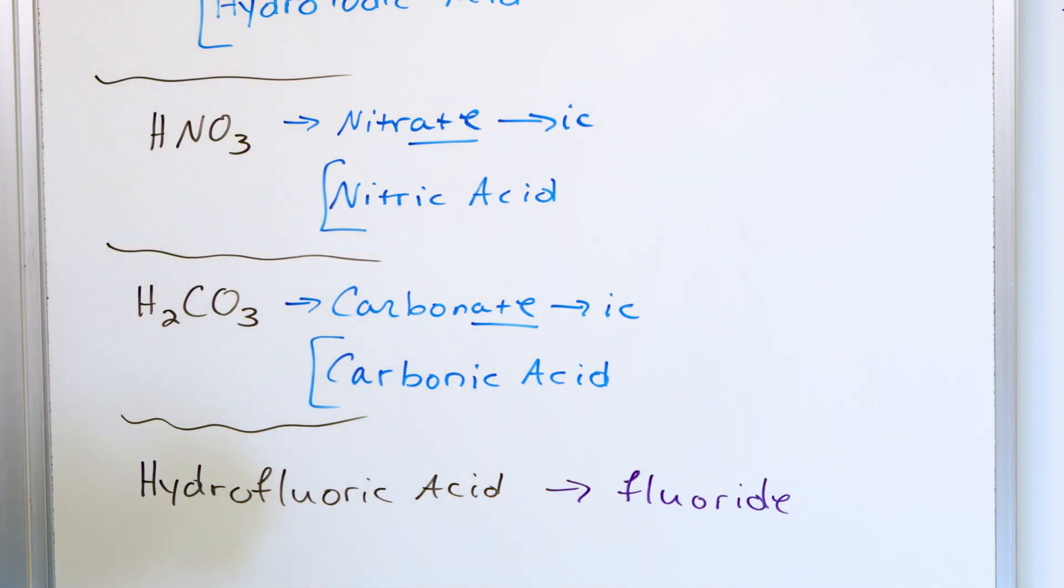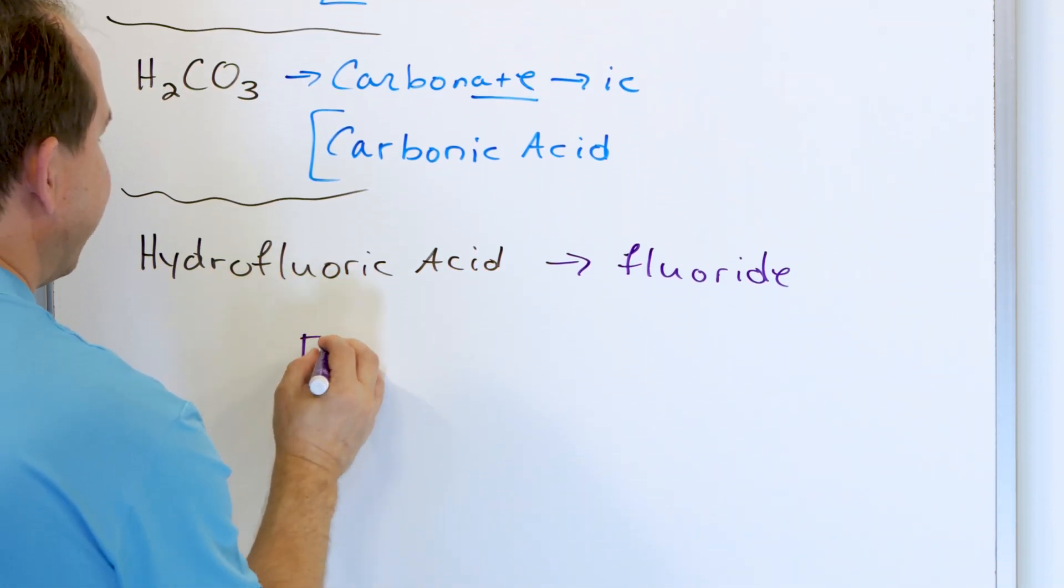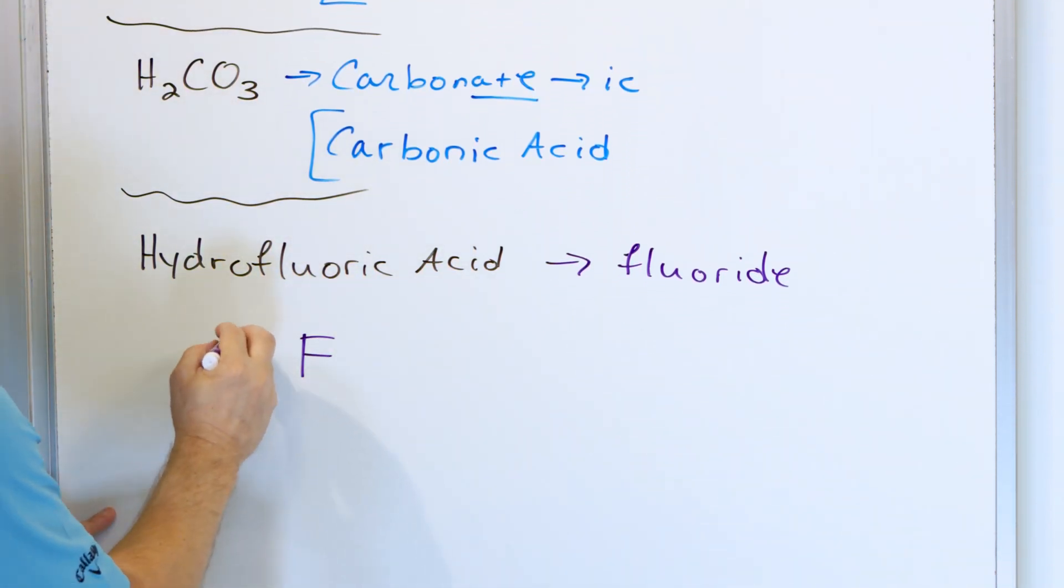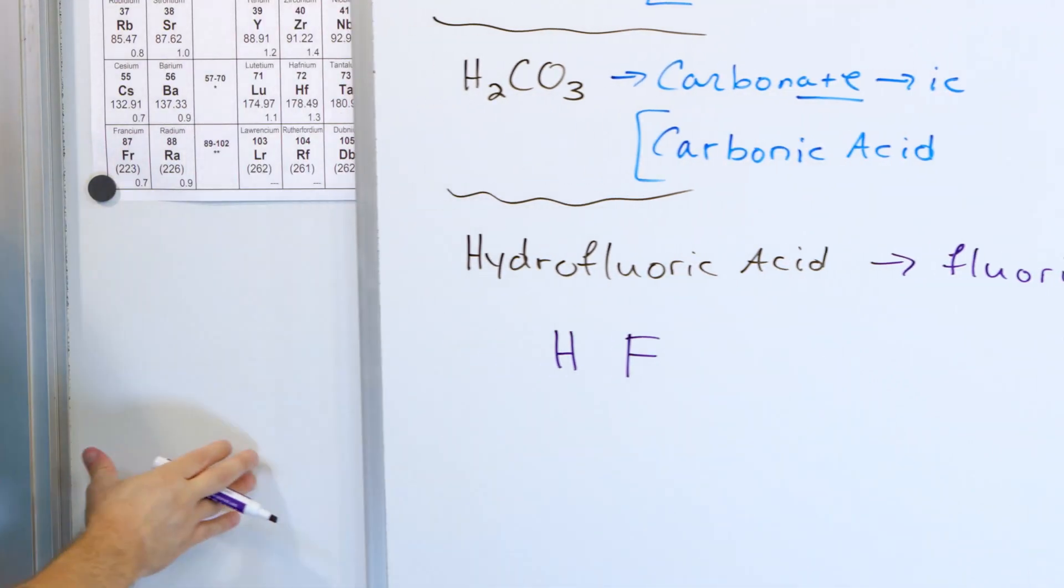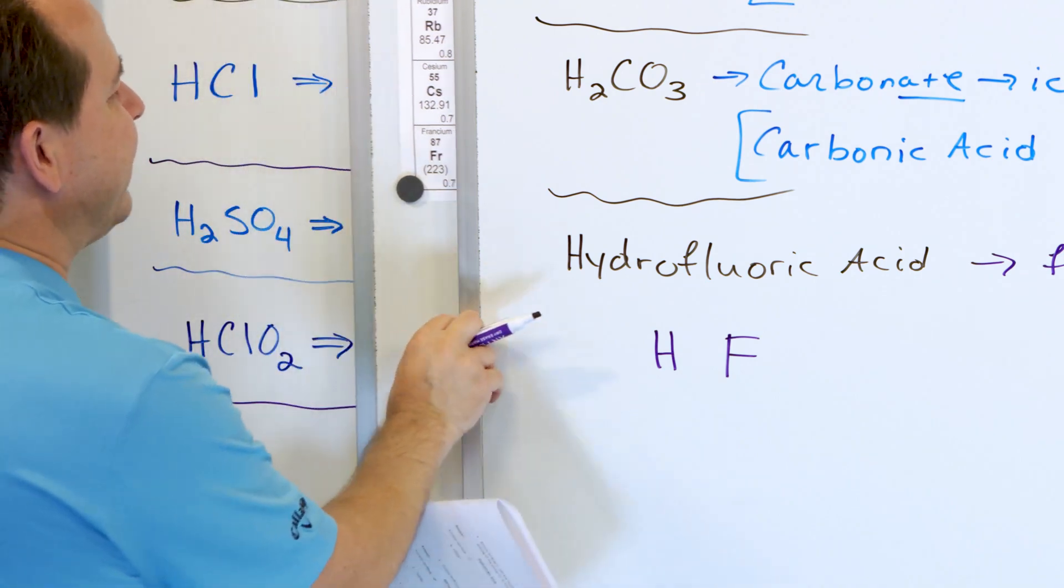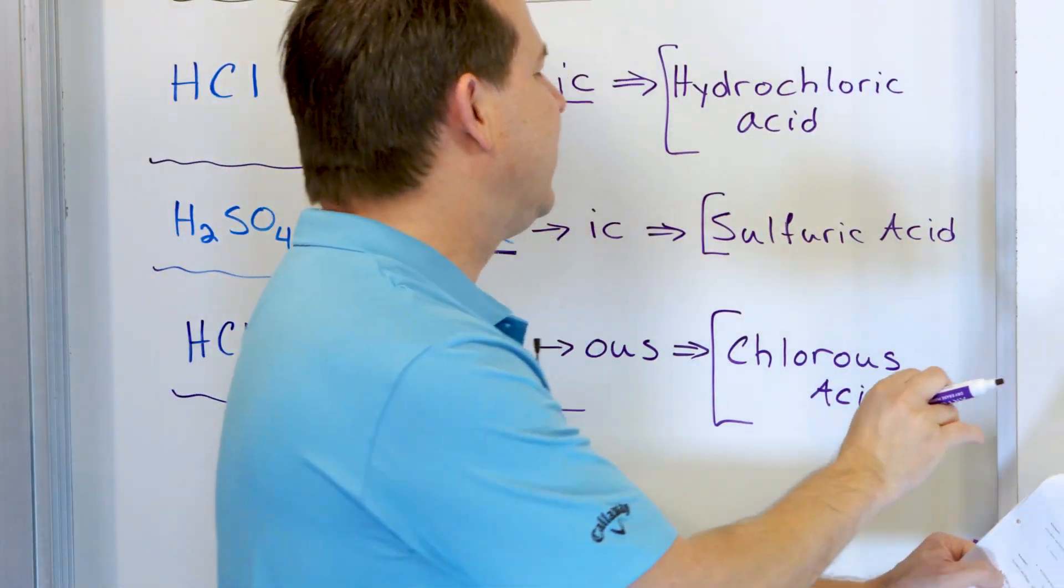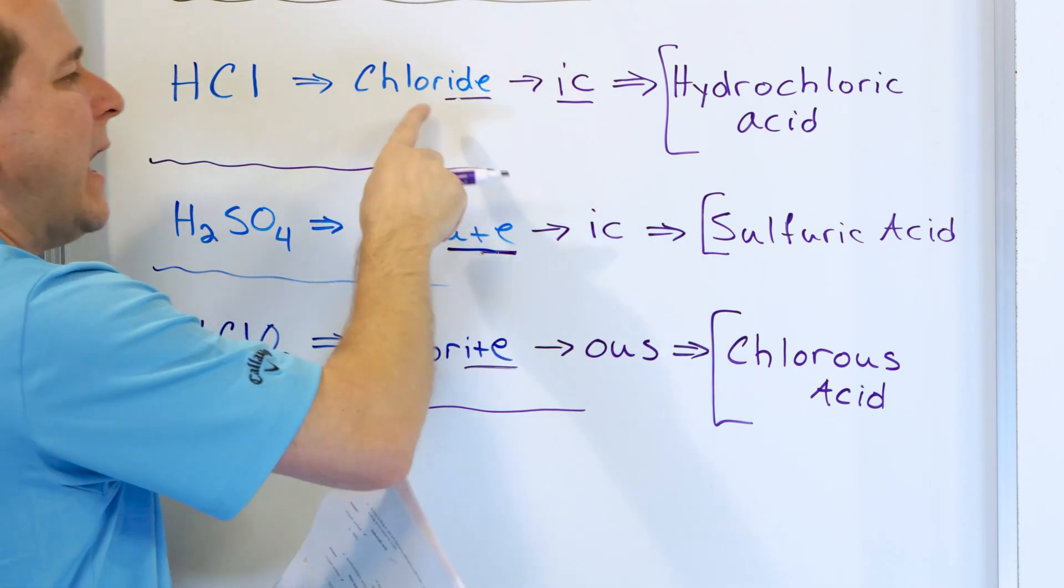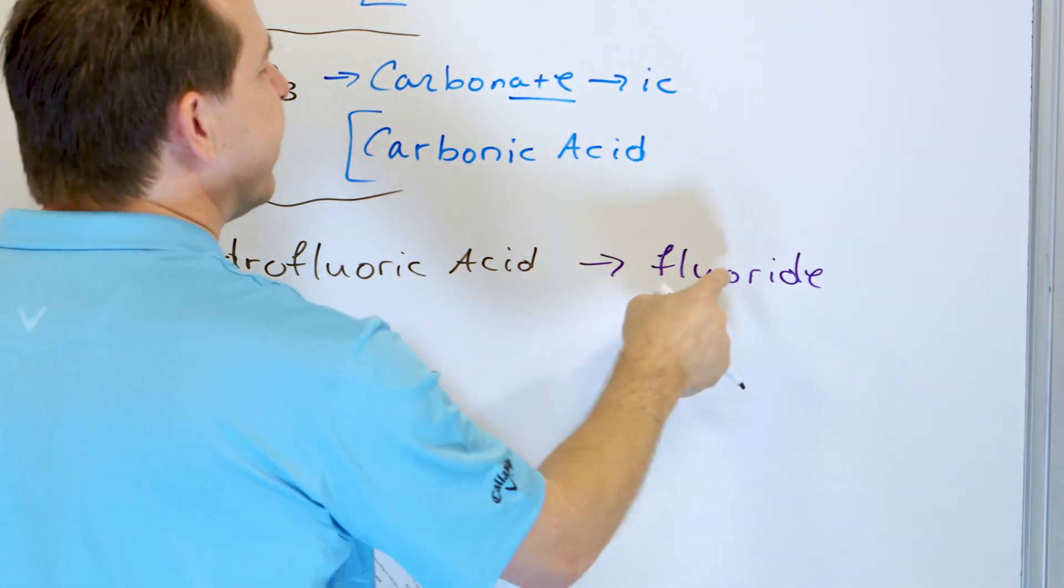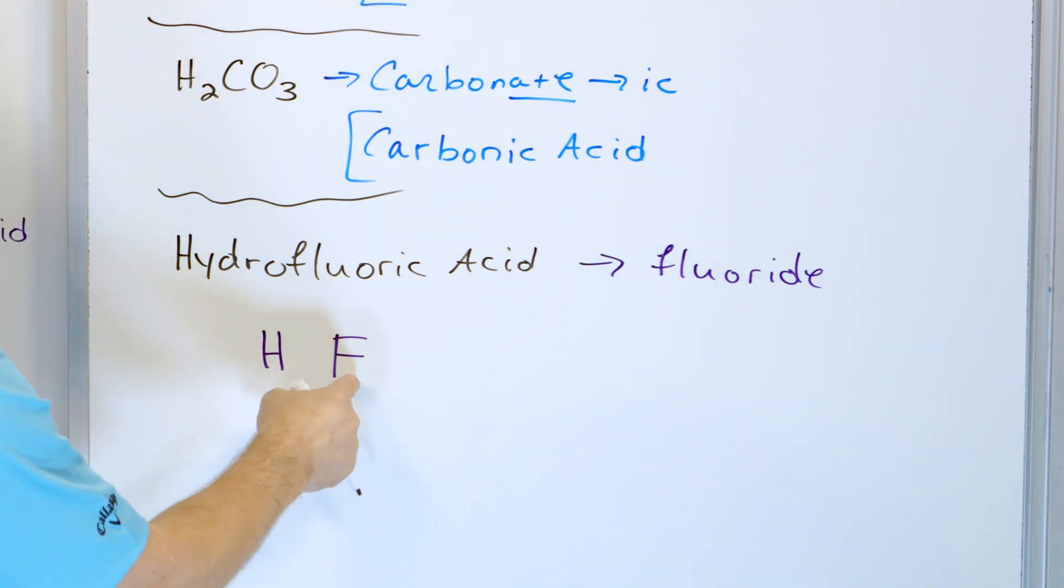Which means the anion is going to be F, and the hydrogen has to be there as well. Because fluoride, IDE becomes IC. So when it's hydro something acid, then it's basically just an element over here, just like it was hydrochloric acid. The IC told us it was chloride. So the IC here tells me it's a fluoride, which tells me it's just F.